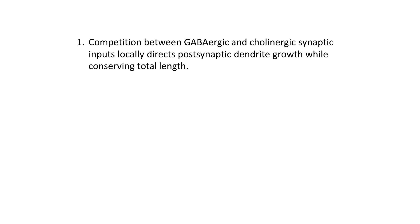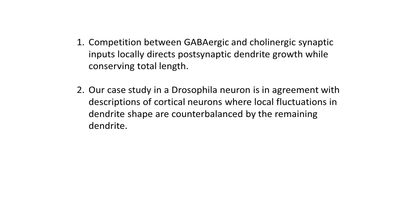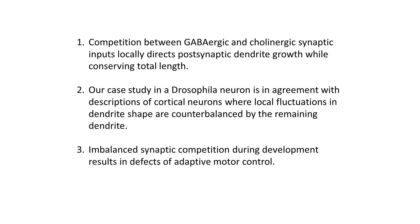Therefore, this study shows that competition between GABAergic and cholinergic synaptic inputs during development locally directs post-synaptic dendrite arbor growth while conserving total length. This case study in Drosophila motor neurons is in agreement with descriptions of cortical neurons where local fluctuations in dendrite shape are counterbalanced by the remaining dendrite, and could be a general phenomenon for all neurons that contain several input domains. Finally, we have shown that imbalanced synaptic competition during development results in defects in adaptive motor control.